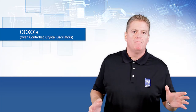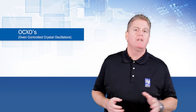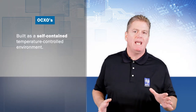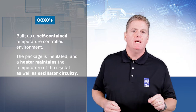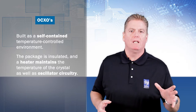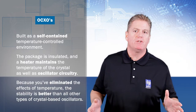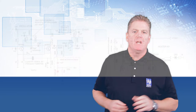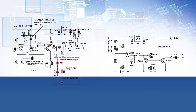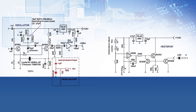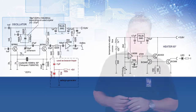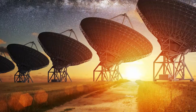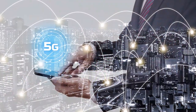Last are the OCXOs. They are the top of the crystal oscillator hierarchy. OCXO, or oven-controlled crystal oscillators, are built as a self-contained, temperature-controlled environment. The package is insulated, and the heater maintains the temperature of the crystal as well as the oscillator circuitry. Because you have eliminated the effects of temperature in an OCXO, the stability is better than all other types of crystal-based oscillators. Some OCXOs have stabilities as low as 0.5 parts per billion. An entry-level OCXO has stability of 250 parts per billion — that is the equivalent of one quarter of one second over 80 years. OCXOs are typically used in applications requiring very accurate frequency stability, including satellites and satellite communications, networking telecom, and test and measurement equipment.